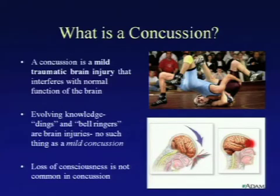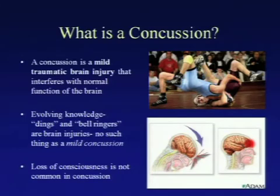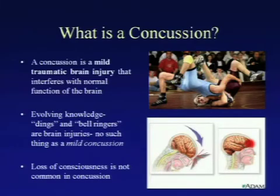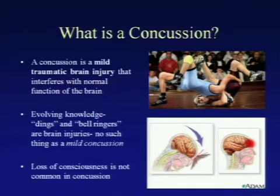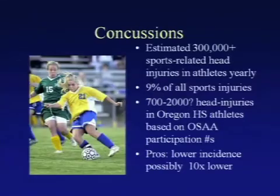What is a concussion? Concussion is any traumatic brain injury that interferes with the normal function of the brain. We're talking about what happens when you hit your head or have an acceleration or deceleration-type injury. It used to be called 'dings' and 'bell ringers,' but any hit to the head is really a concussion. Many people thought loss of consciousness was the hallmark, but now we know only about 10% of concussions involve loss of consciousness.